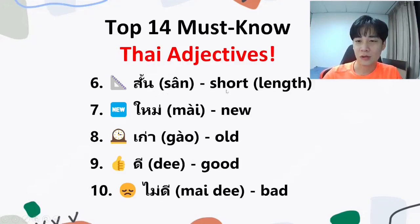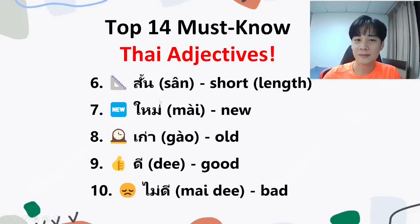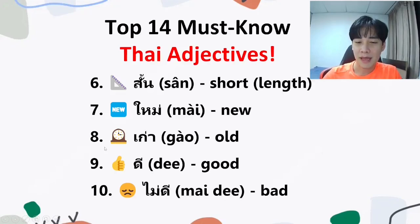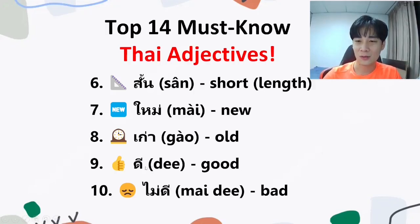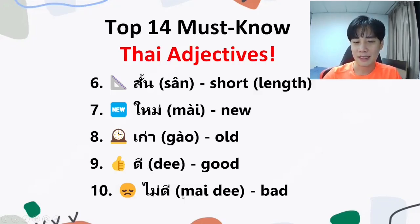Number 6, สั้น — short. Falling tone, สั้น. Numbers 7 and 8: ดี — good. Low tone, ดี. And ไม่ดี — bad. ดี is good, ไม่ดี is bad.